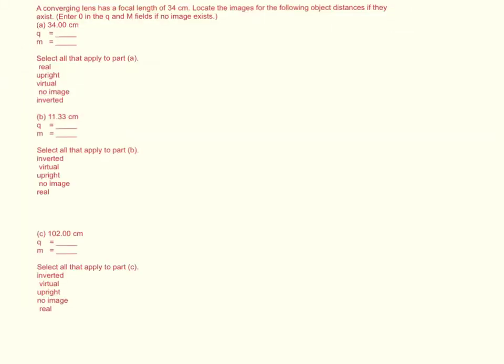A converging lens has a focal length of 34 cm. Locate the following object distances if they exist. Enter 0 in the Q and M field if no image exists.